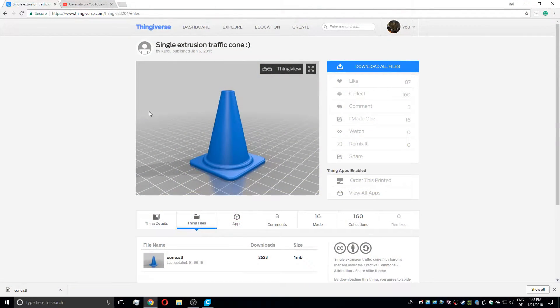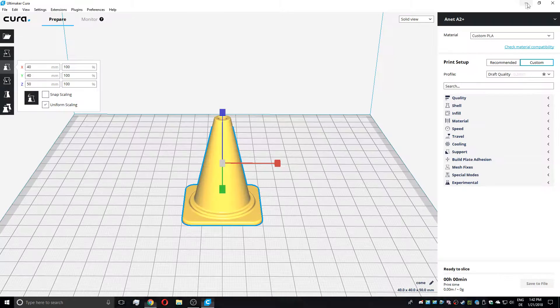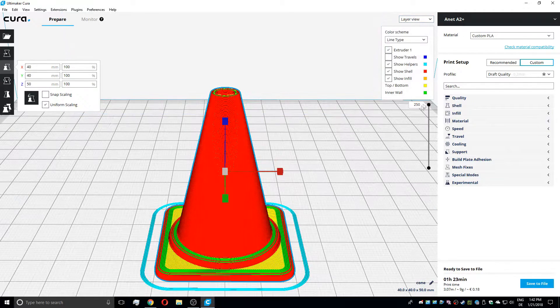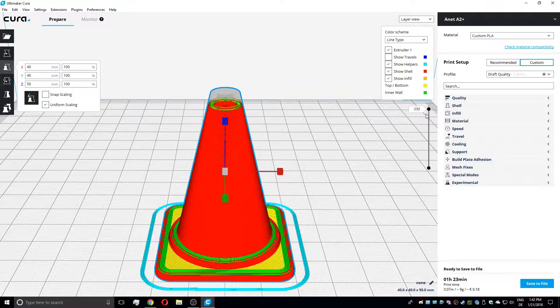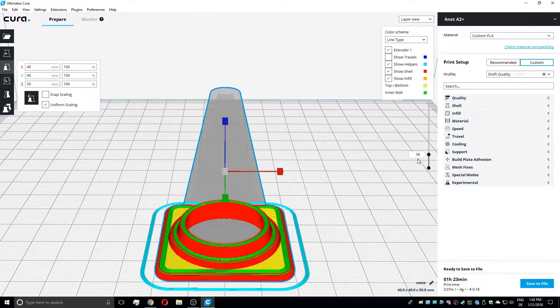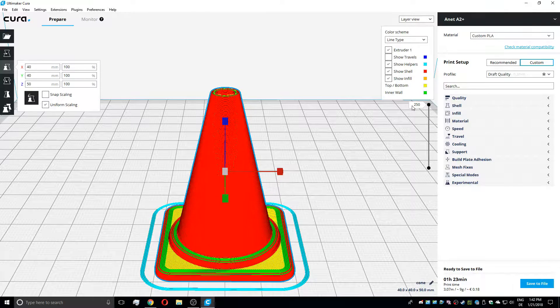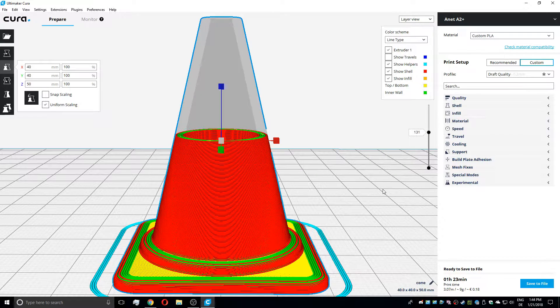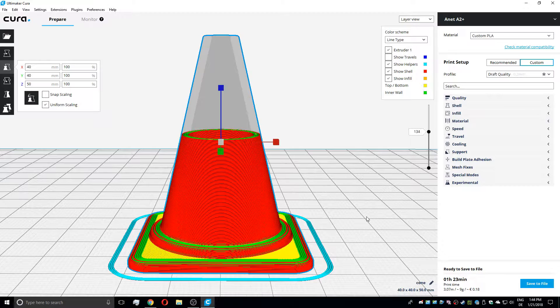Once completed, load up a model you want to have multicolored, like this traffic cone which comes as a typical single color model. With 0.2mm layer heights, the default scaled model is exactly 250 layers high. The base color should be orange, with white stripes being between layer 50 and 90 and 130 and 170.